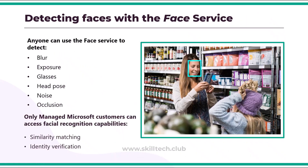After image analysis, we have face detection also as a part of the vision service. Face detection involves identifying regions of an image that contain a human face, typically by returning bounding box coordinates that form a rectangle around the face. As you can see here, a human face is detected with a square box. Anyone can use this face service to detect blur, exposure, or maybe detect glasses or mask.